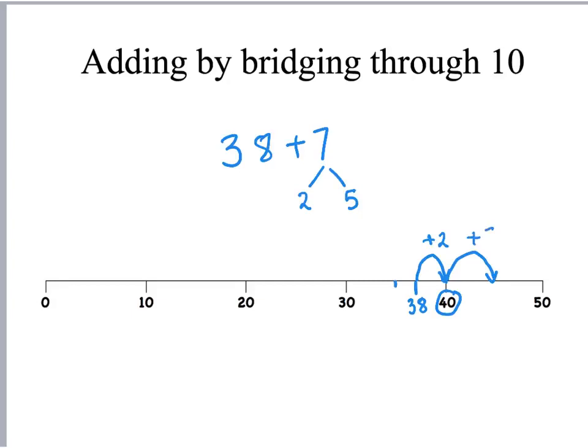5 added on to 40, I can get there straight away, that's 45. And so the answer to 38 plus 7 is 45.